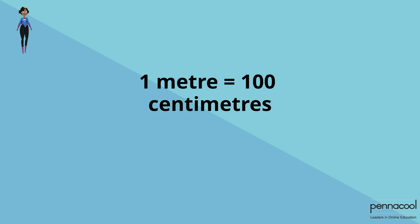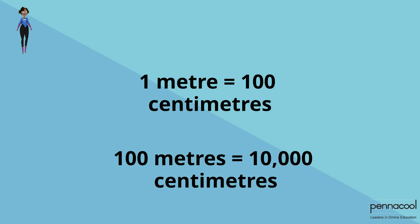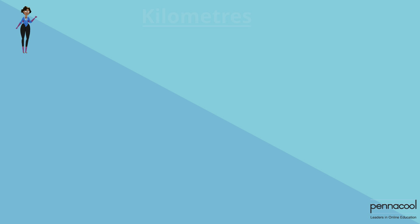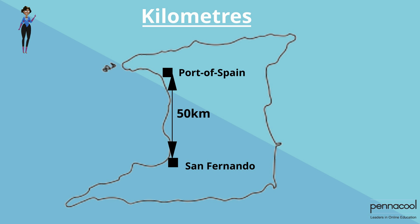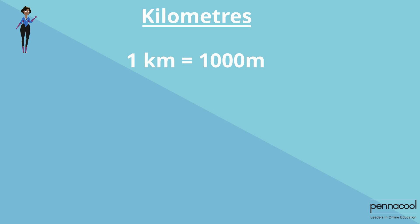It would not make sense representing the 100-meter dash as the 10,000-centimeter dash. For even longer distances, we use kilometers. The distance between towns, for example, Port of Spain to San Fernando, would be represented in kilometers. 1 kilometer is equal to 1,000 meters.